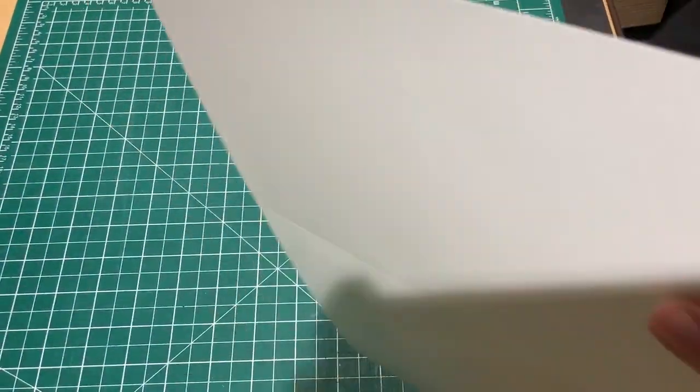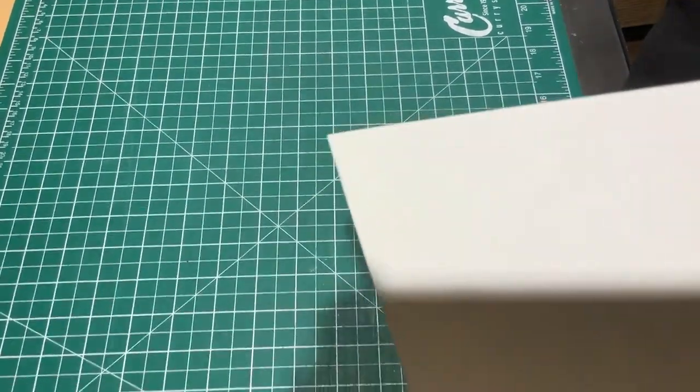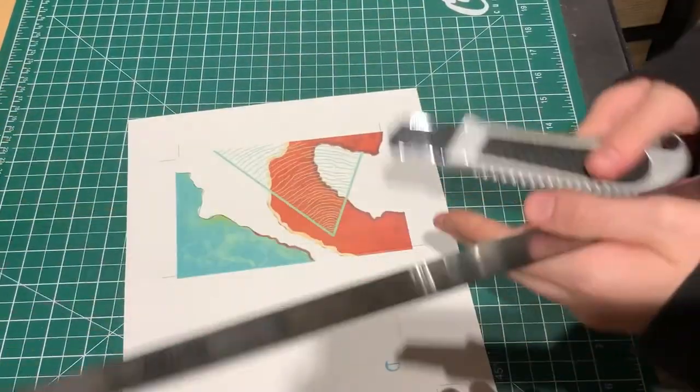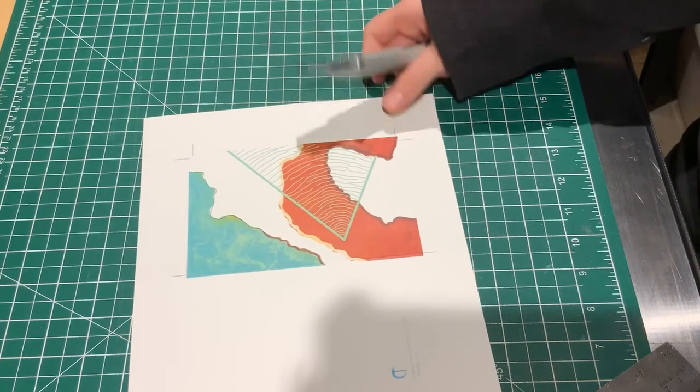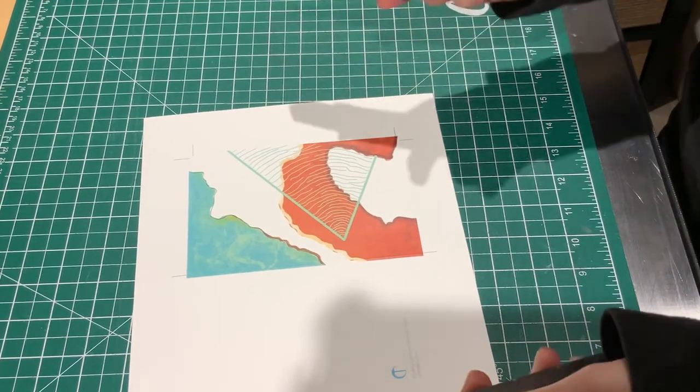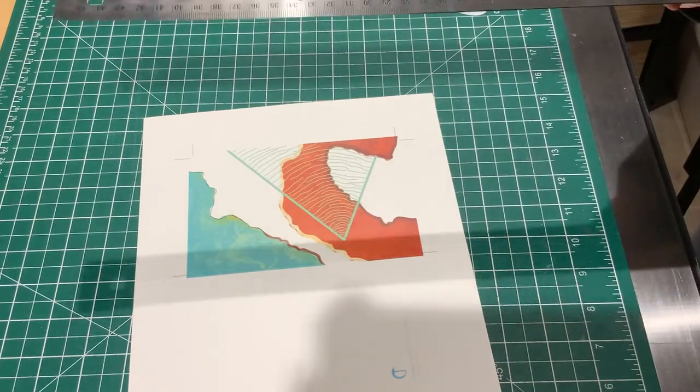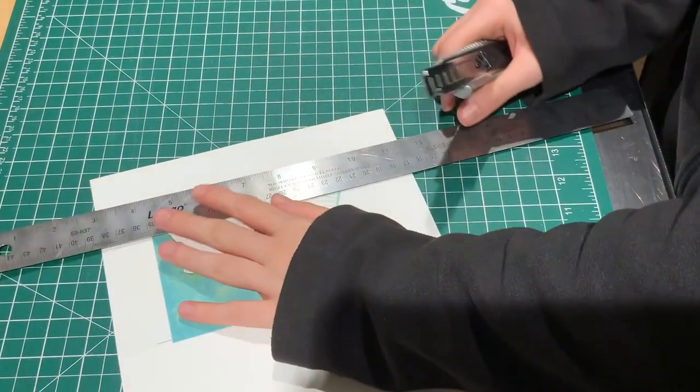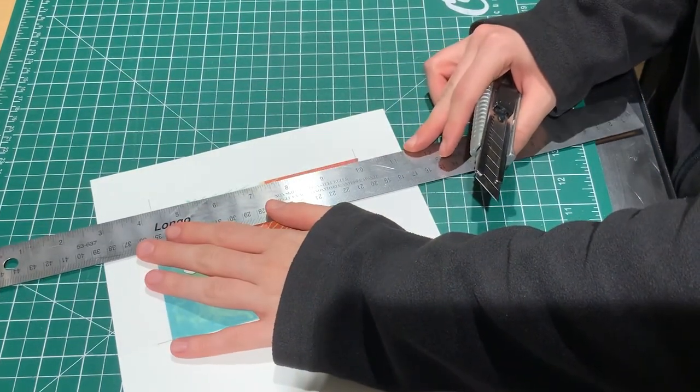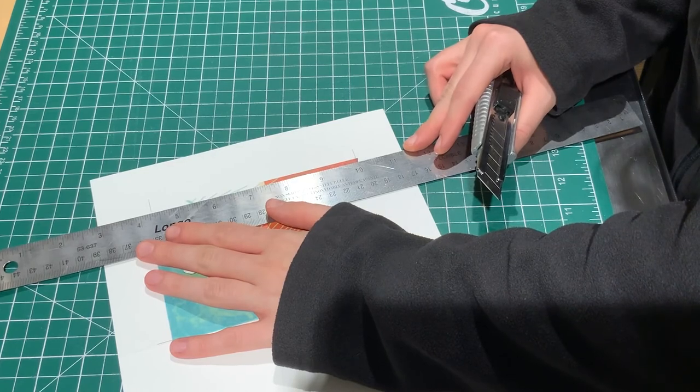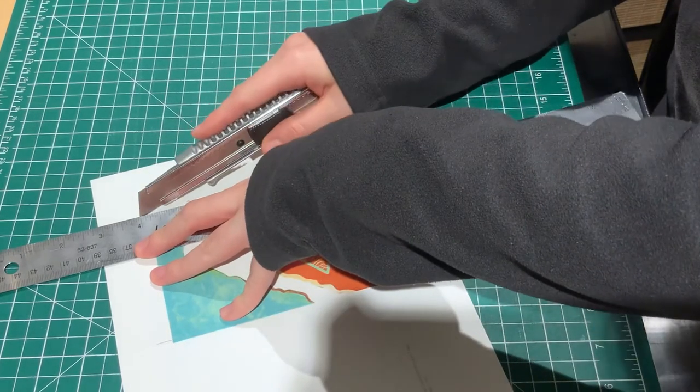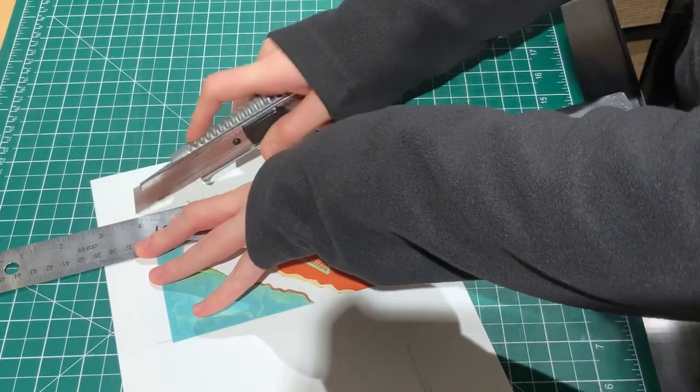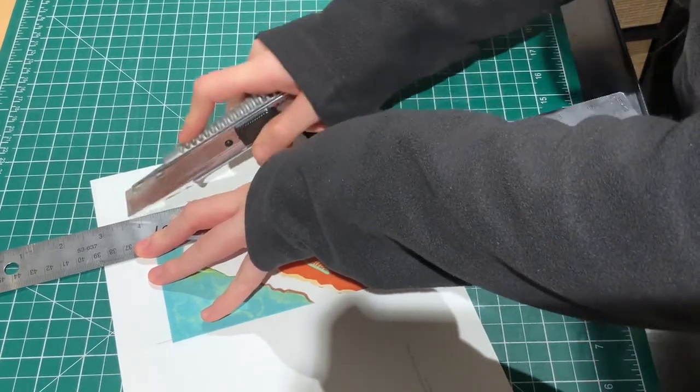And once my fold line was complete, I used my ruler and my exacto knife and I cut it down to size. So I lined up everything with my crop marks. Once I had that all cut down to size, I brought out my bone tool and that helped to clean up my fold line. So I ran it along the side of the card and that cleaned it all up and we are ready to put some finishes on this.